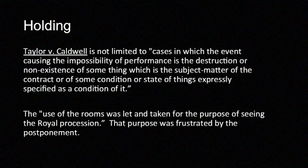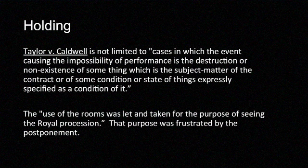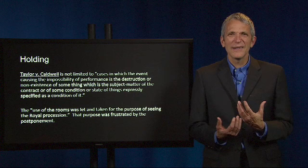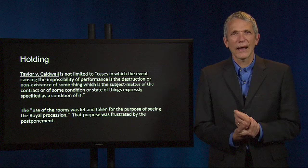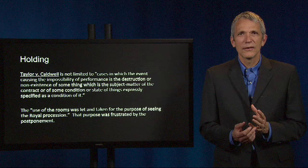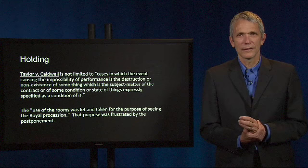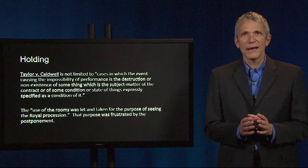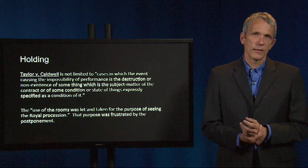The court held that the principle underlying Taylor v. Caldwell is not limited to cases in which the event causing the impossibility of performance is the destruction or nonexistence of some thing which is the subject matter of the contract or of some condition expressly specified as a condition of it. The court expanded the principle to the underlying purpose of the contract, saying one must ascertain the substance of the contract and ask whether it needs for its foundation the assumption of the existence of a particular state of things. The court concluded that the use of the rooms was let and taken for the purpose of seeing the royal procession, that purpose was frustrated by the postponement, and therefore the defendant's breach was excused.